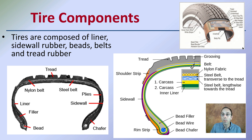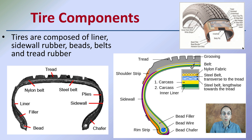This helps give them their strength, helps give them their shape, and helps allow them to stay flexible. The main components are sidewall rubber, beads, belts, and tread rubber. Some tires may even include steel belts to help give them rigidity and strength.